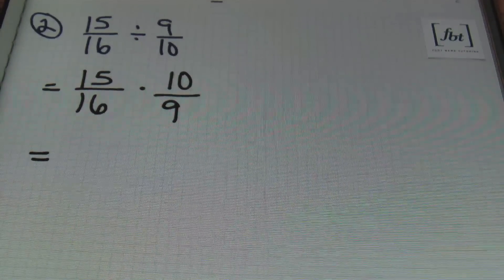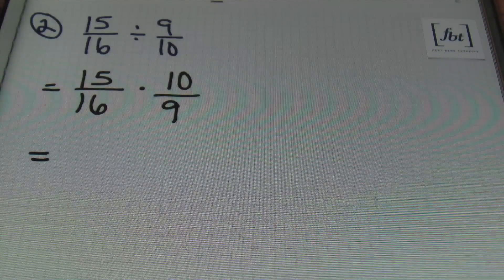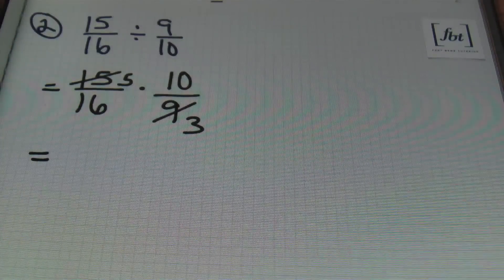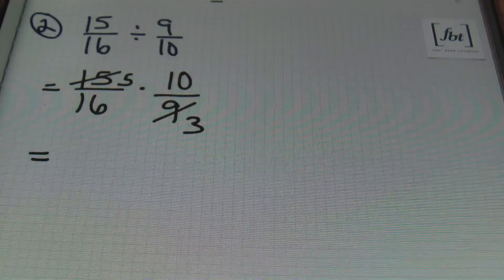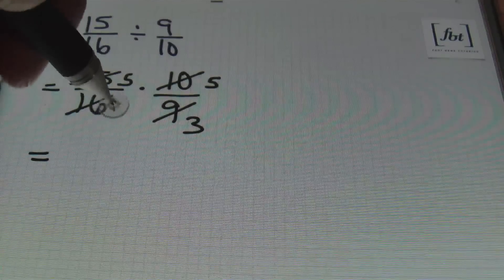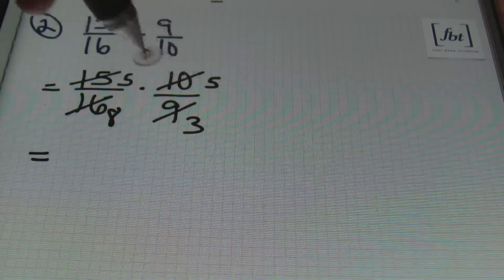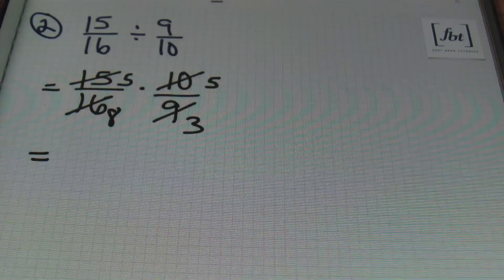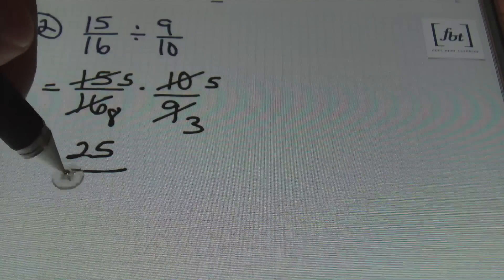From here, I'm looking to simplify before I multiply. I notice that 15 and 9 can both be reduced by 3. So 3 goes into 9 three times, 3 goes into 15 five times. I'm also noticing that 10 and 16 can both be reduced by 2 — they're both even. So 2 goes into 10 five times and 2 goes into 16 eight times. None of the remaining numbers in the numerator can be reduced with any of the numbers in the denominators, so it's time to multiply straight across. So 5 times 5 is 25, and 8 times 3 is 24.